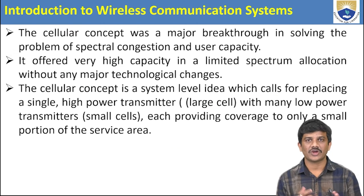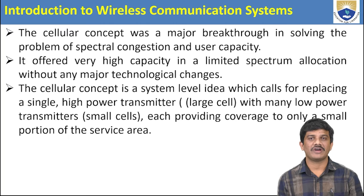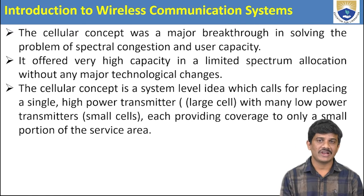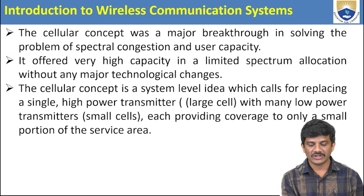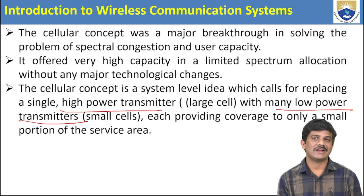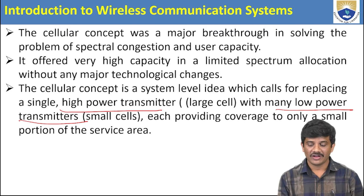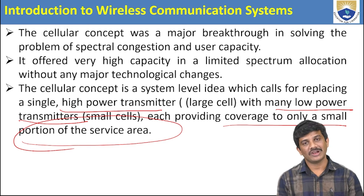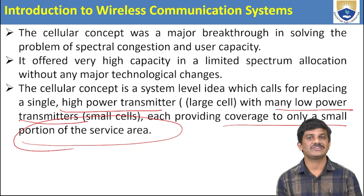Wireless communication mainly solves the problem of spectral congestion and user capacity using the cellular concept. We can use smaller cells to replace signals. With large cells, high-power transmitters are needed; with small cells, low-power transmitters are used. Both large and small cells provide coverage to only a portion of the service area. Based on frequency, the network covers a particular area.